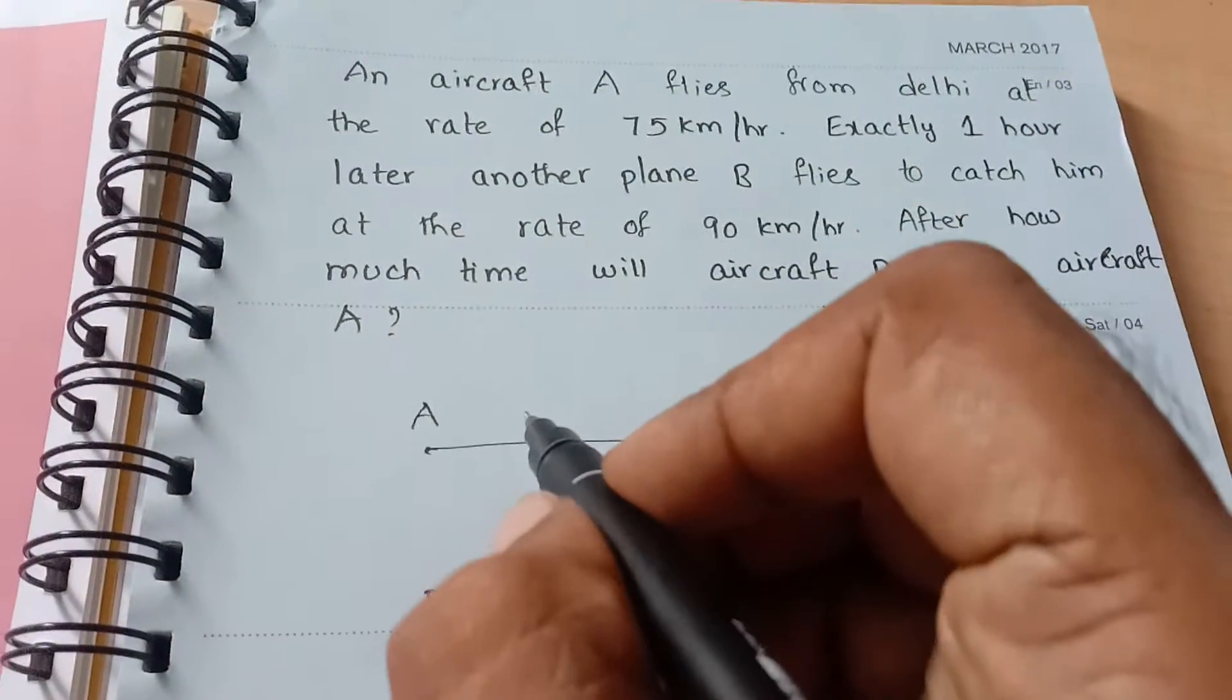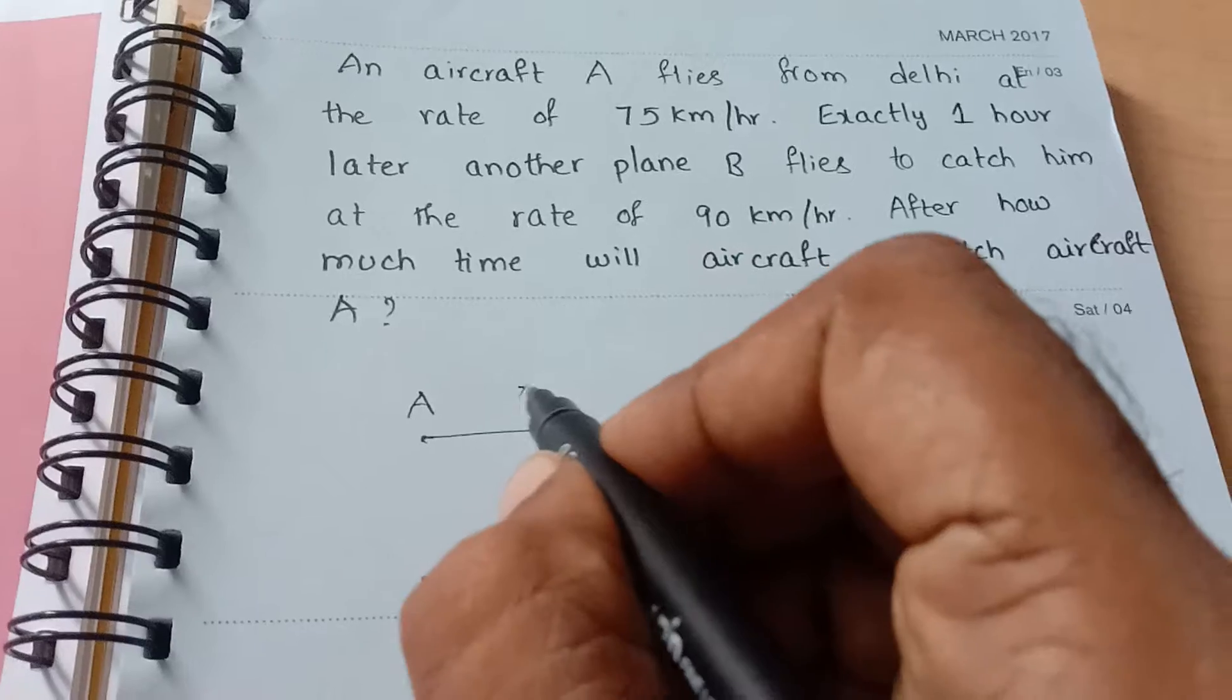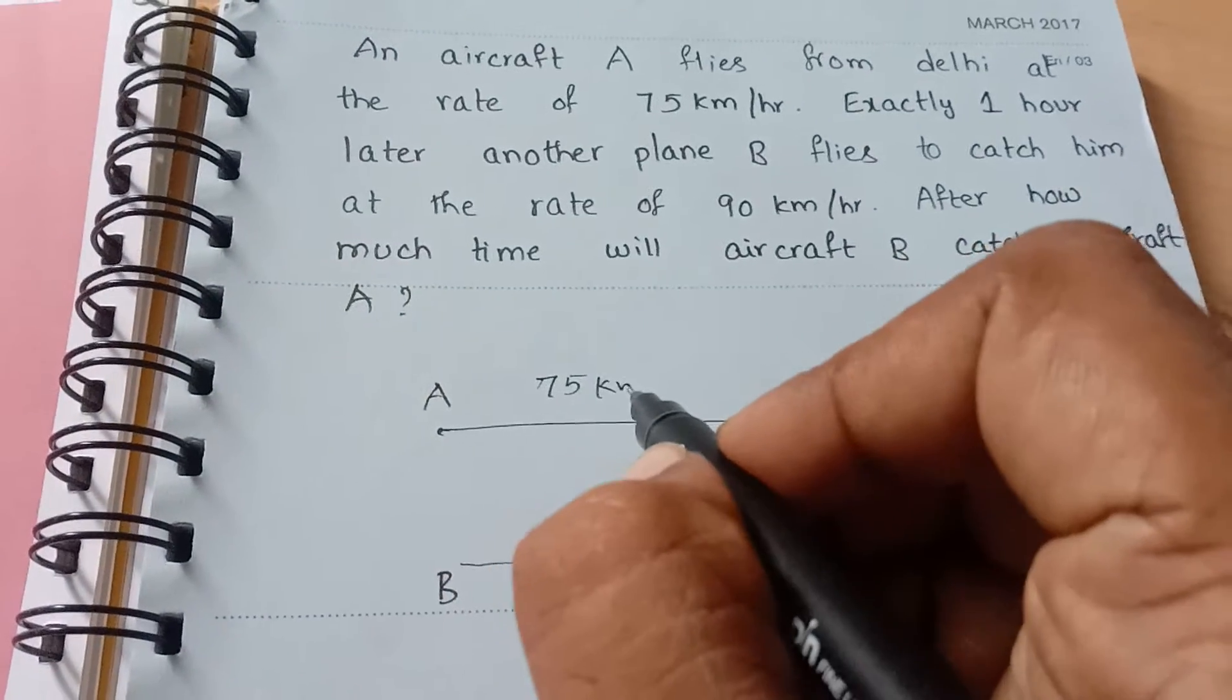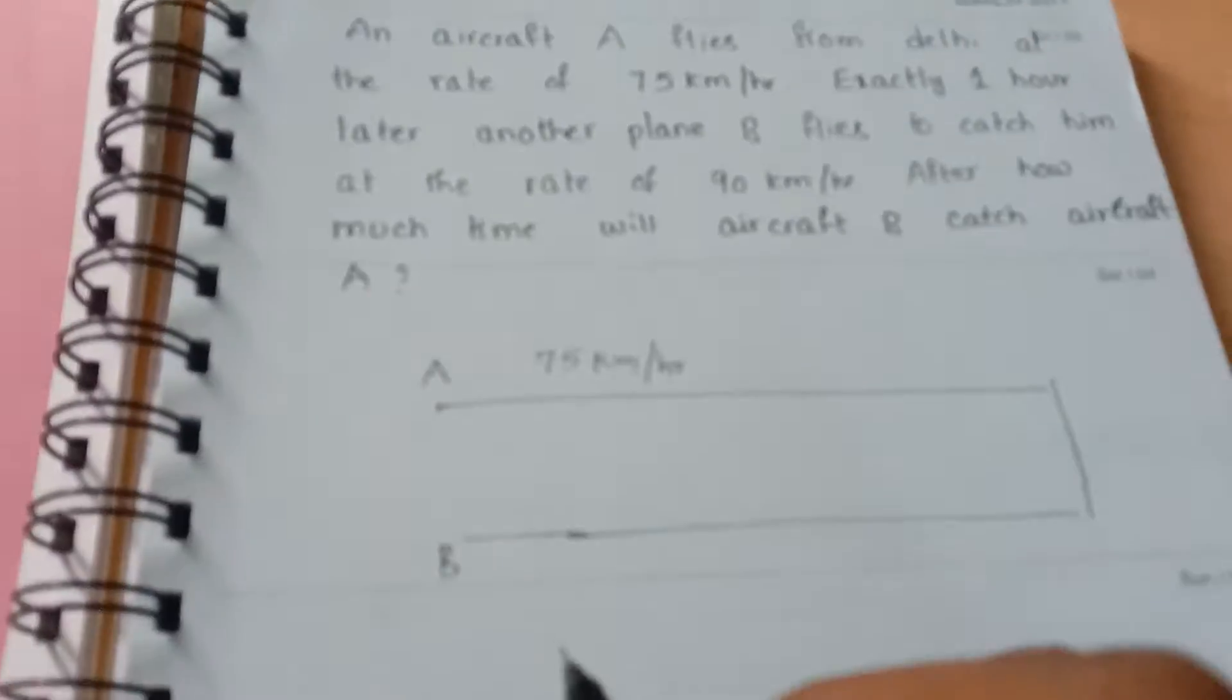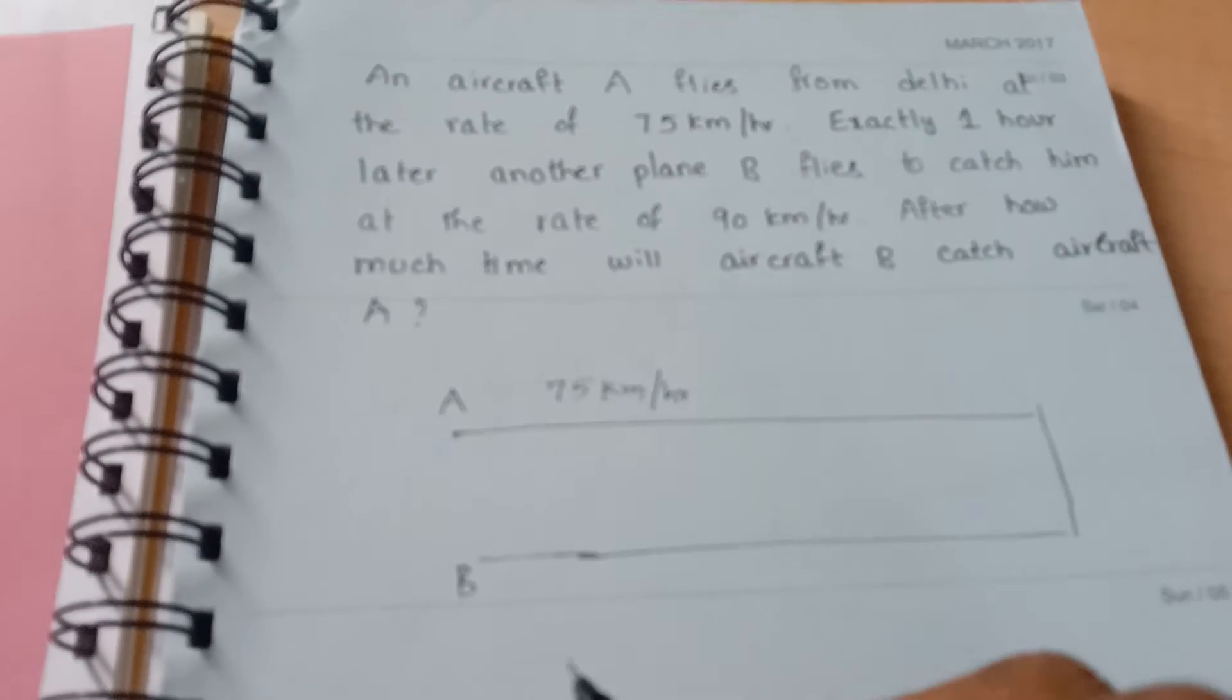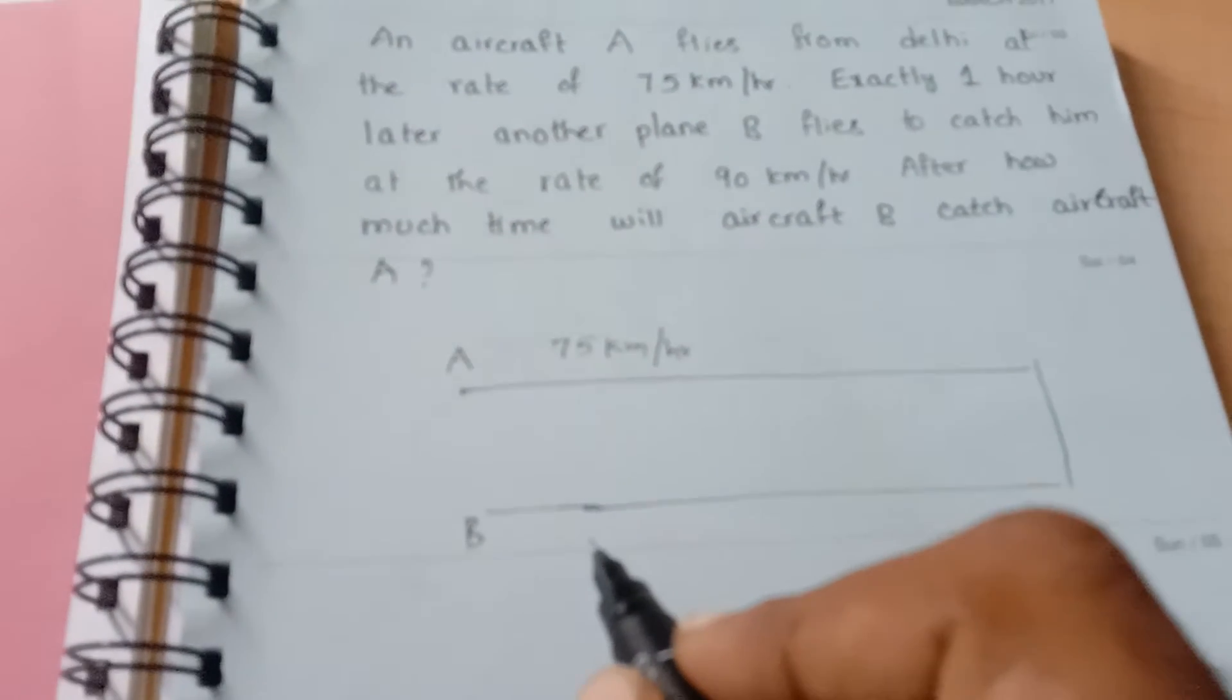What is the speed of this aircraft A? This speed is 75 km per hour. And B's speed is 90 km per hour.